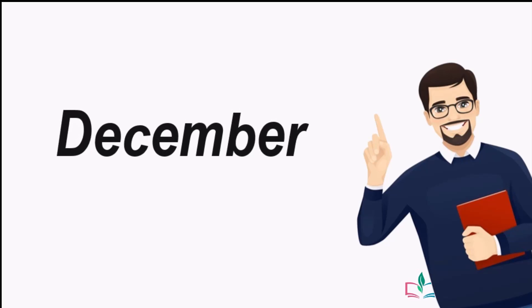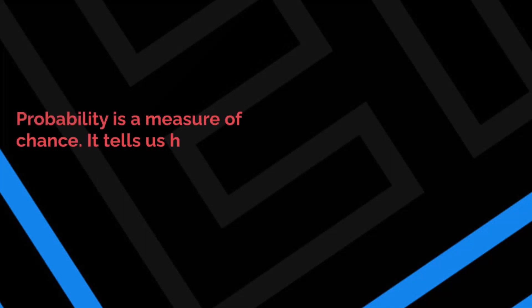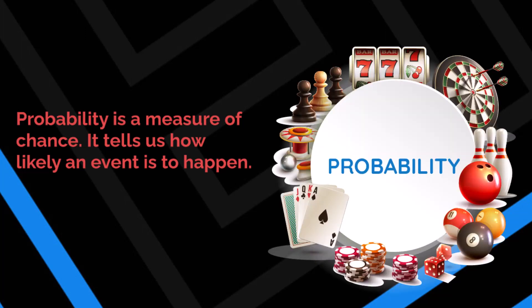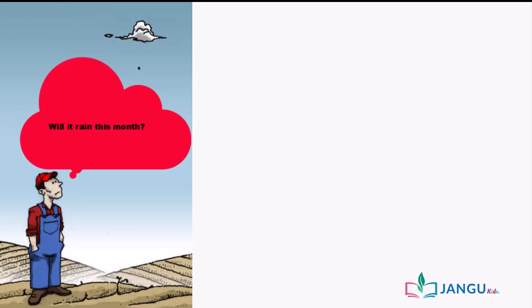And this is what probability is about. Probability is a measure of chance. It tells us how likely an event is to happen. We can use words such as certain, likely, and impossible to describe the likelihood of events. A farmer asks: will it rain this month?